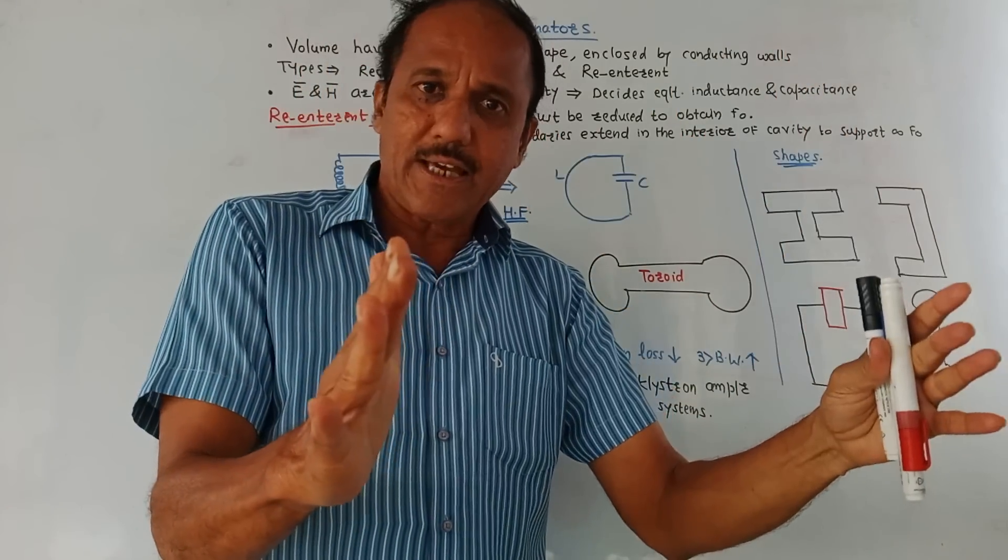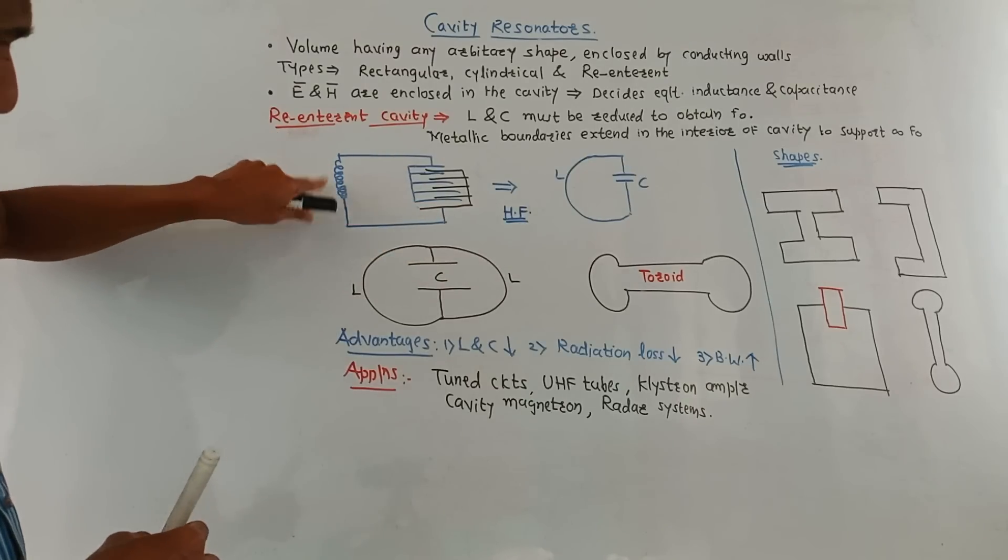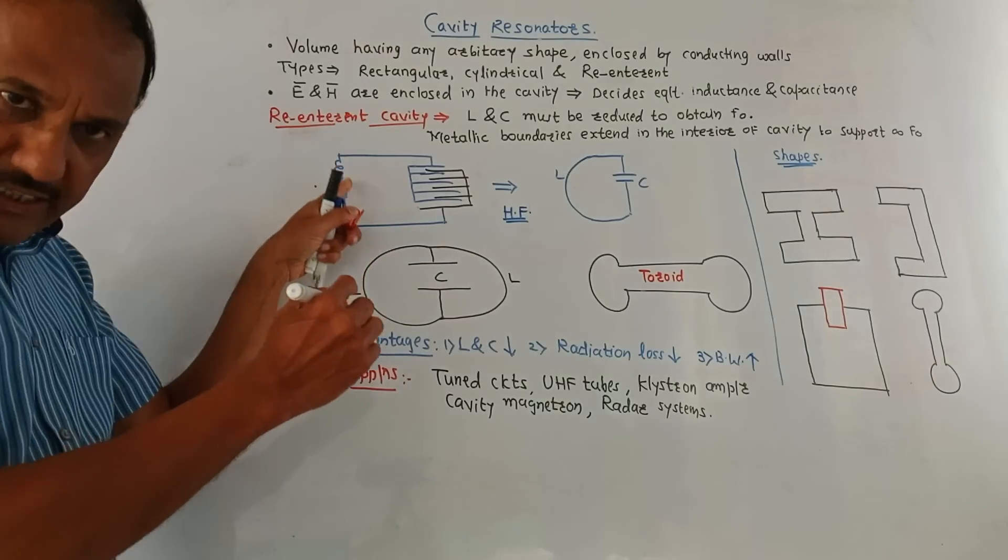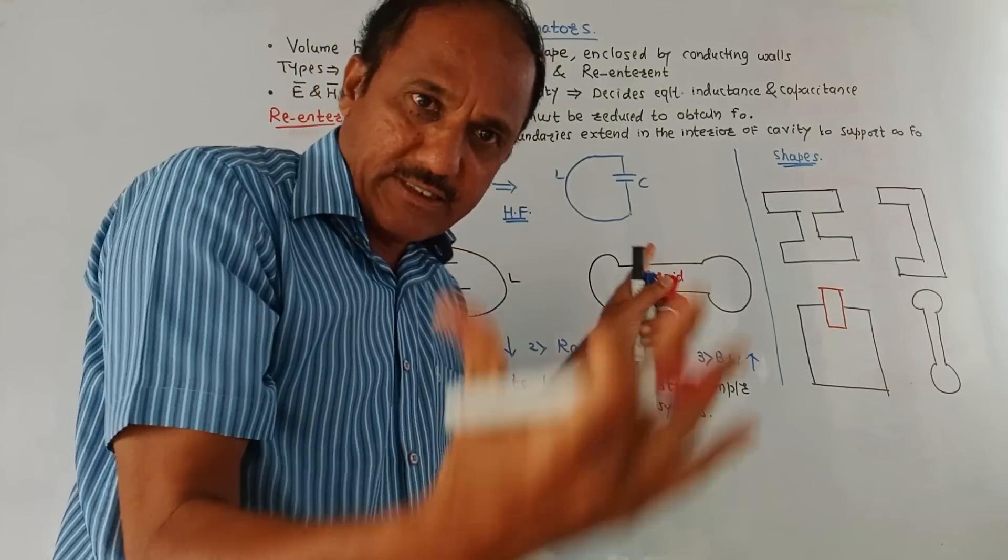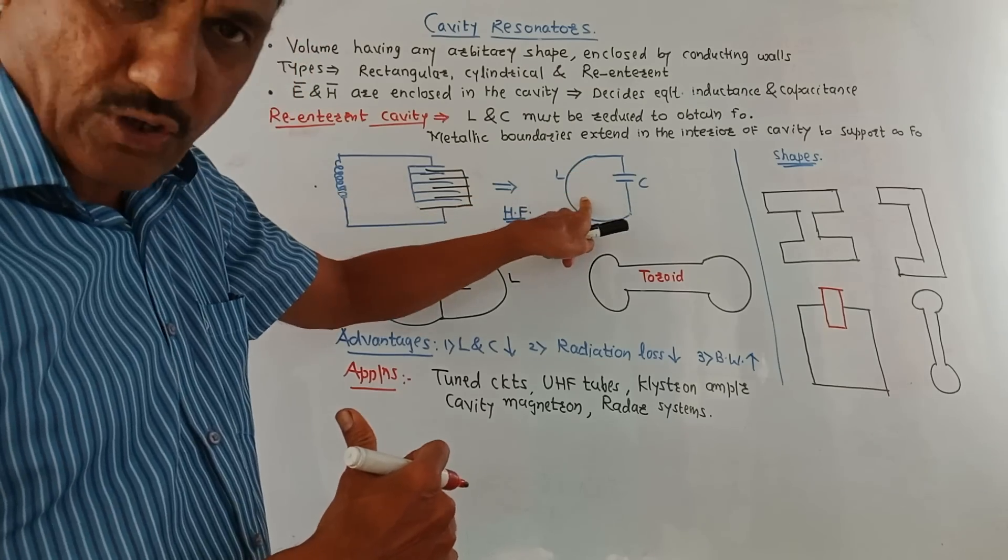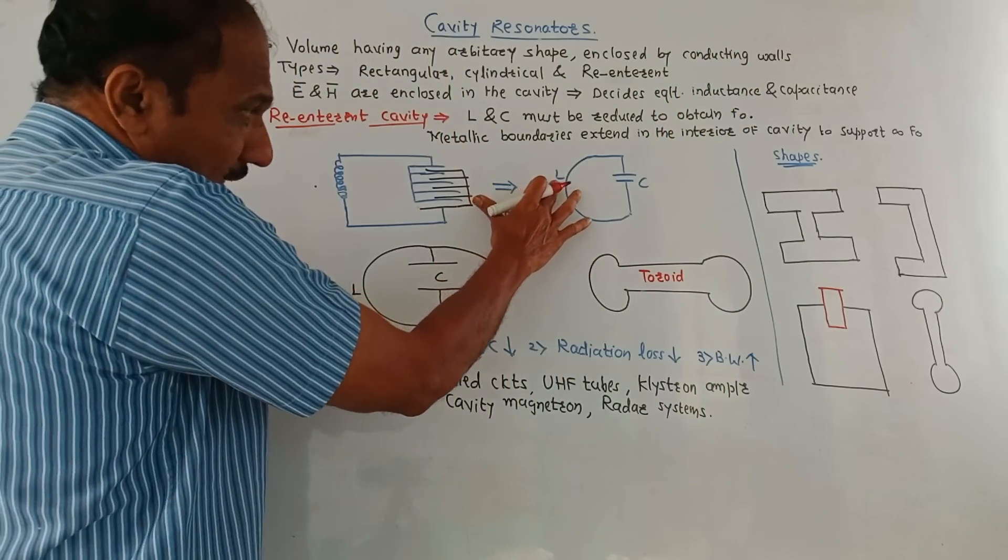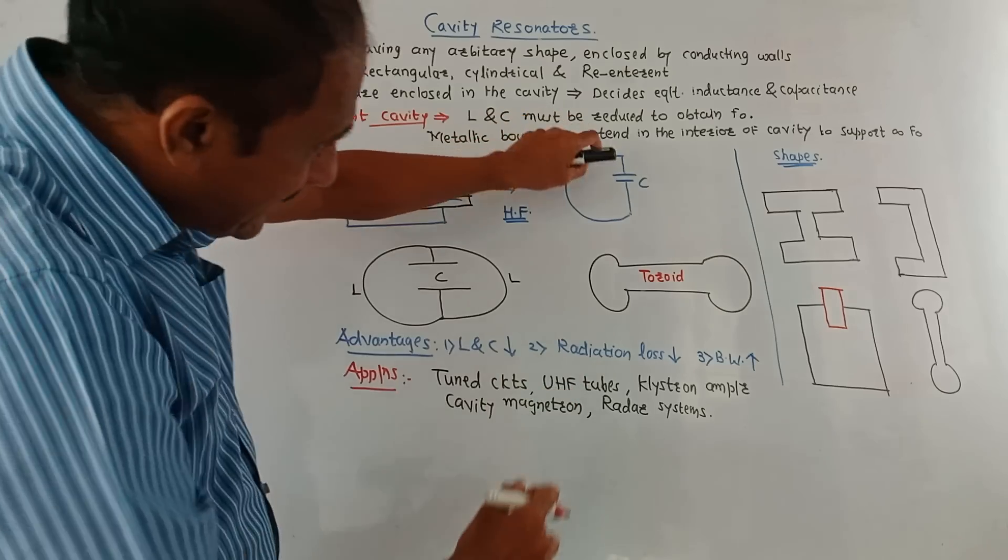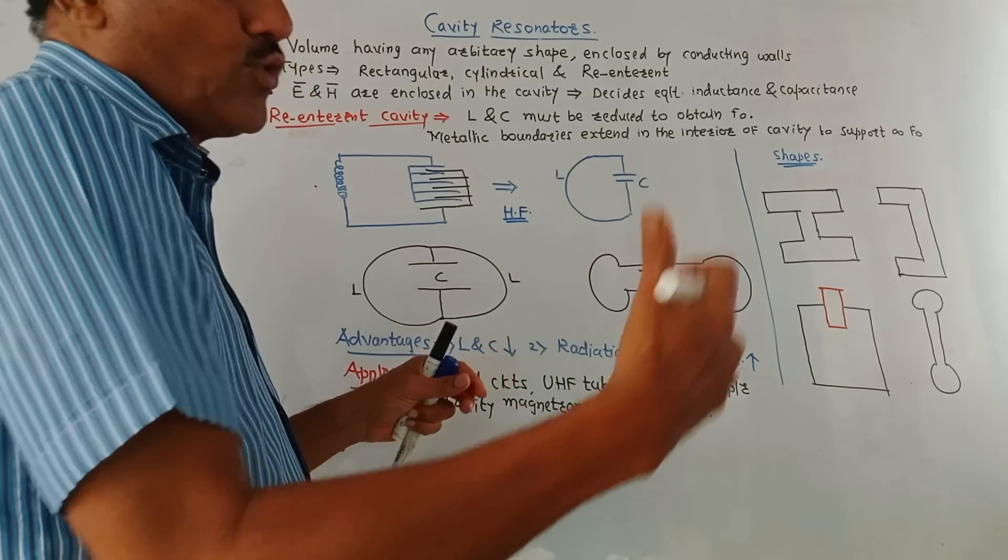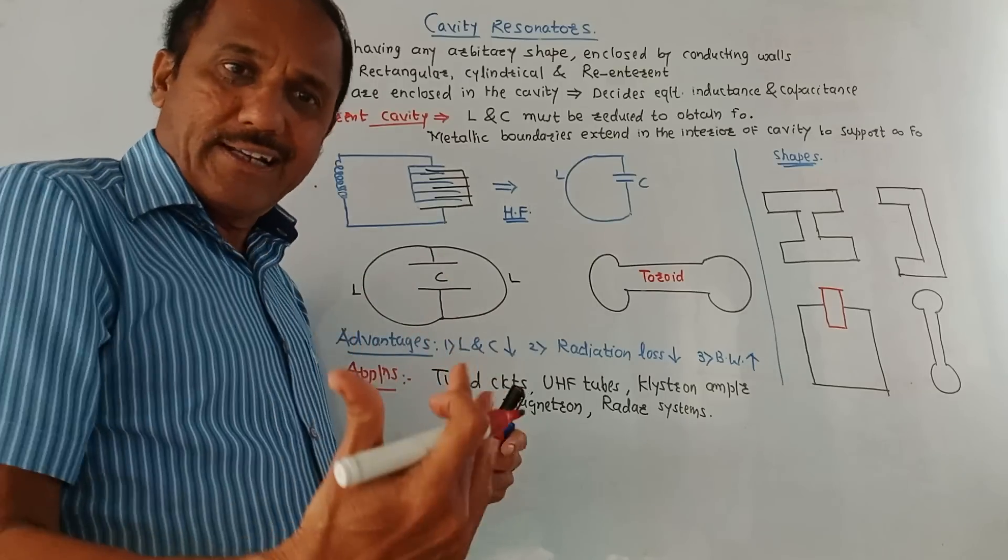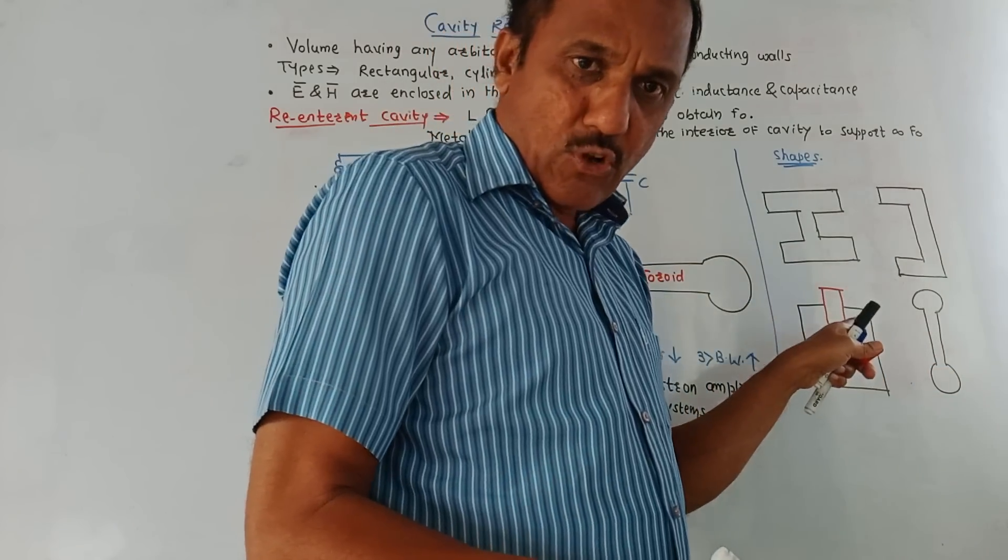And in case of re-entrant cavity resonators, the metallic boundaries extend in the interior of the cavity. It is basically used to support the resonant frequency. Now this structure is similar to the coaxial cable which is shorted at both ends and at the center a capacitor is used. Now at high frequency, this part is L, that is multiple inductors. Multiple turn inductor is shown and these are multiple plate capacitors. So at higher frequency, multi-turn inductor and multi-plate capacitors are reduced by this structure which consists of a single inductor shown by this short line and a single capacitor. As you go on further increasing the frequency, then in that case to reduce the inductor, two inductors are used. It will reduce the effect of inductors and the gap between the plates of a capacitor is increased. So at very high frequency, if there are much more turns for the inductor, then the structure is reduced. It will look like a toroid structure. It is hollow toroid structure.